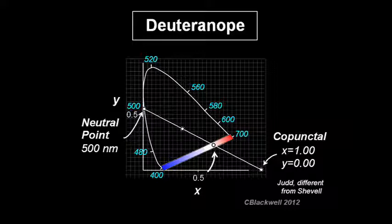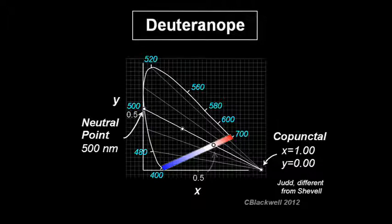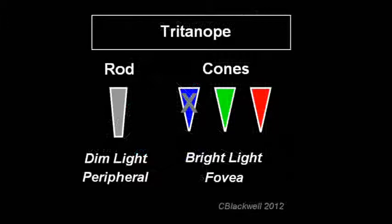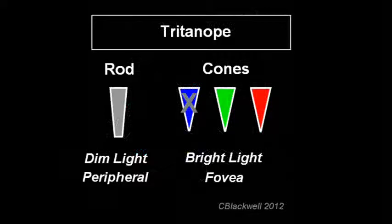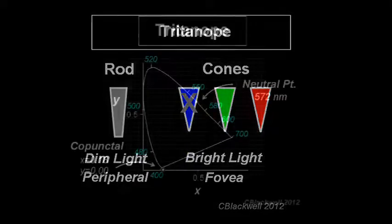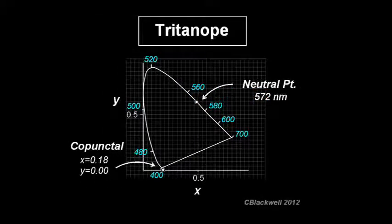The confusion lines for the deuteranope look like this. And if the blue cone is missing, the person is called a tritanope. Here are the neutral and copunctal points, and here are the confusion lines.